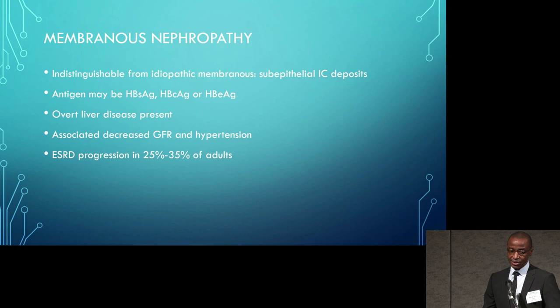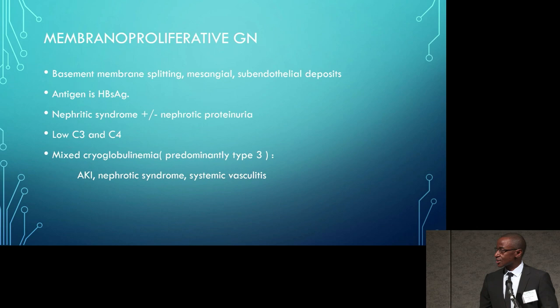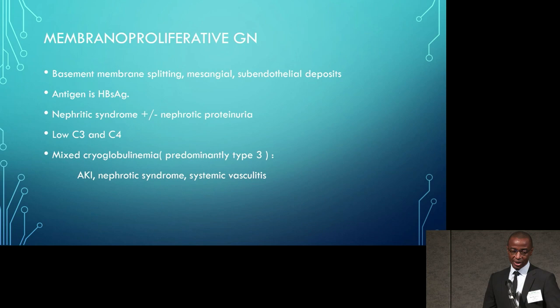Membranoproliferative glomerulonephritis may also be seen, with a characteristic histological pattern of basement membrane splitting and subendothelial deposits; the antigen here is primarily the hepatitis B surface antigen. These patients present with either nephritic syndrome — hypertension, edema, and active urine sediment — or with overt nephrotic proteinuria. Typically, these patients have low complements reflecting immune complex activation and may have manifestations of mixed cryoglobulinemia, predominantly type 3.